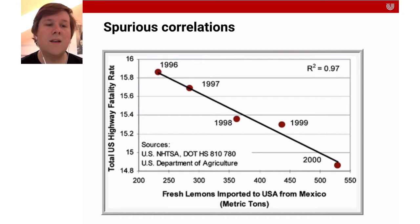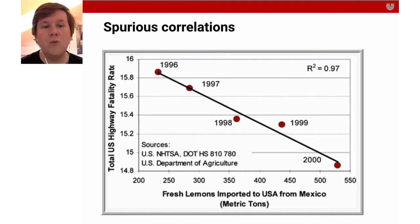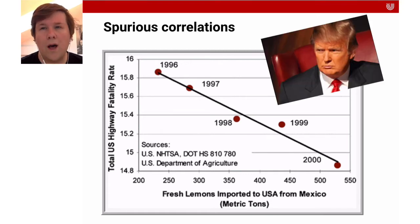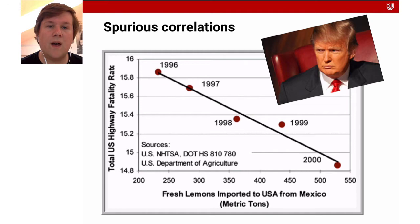One example is the total number of people who die on US highways and the amount of lemons imported to the US from Mexico. You can see the more you import from Mexico, the fewer people die on the highway. The R-squared, the explained variance, is 0.97 — very, very high. So people could look at this and think there is a relationship: maybe if we want to lower highway deaths, we just need to import more lemons from Mexico. But of course, that's a pretty stupid idea — there's no real relationship here.